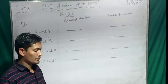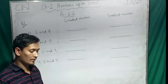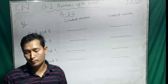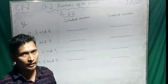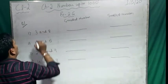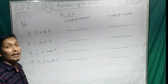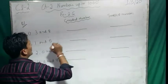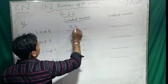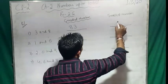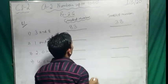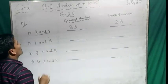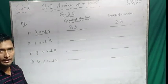Let's do our exercise. Arrange the following digits to form the greatest and smallest number. Question 1: digits 3 and 8. For greatest, we start with 8 then 3 — giving 83. For smallest, we start with 3 then 8 — giving 38. So the greatest number is 83 and the smallest number is 38.